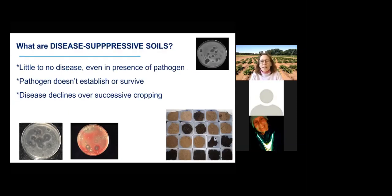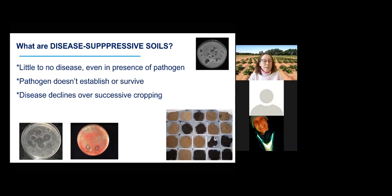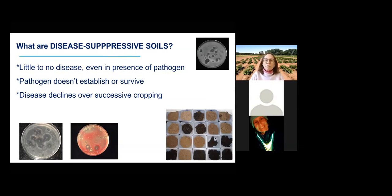What are disease suppressive soils? In a nutshell, a disease suppressive soil is a soil in which disease — usually one, maybe a couple of diseases — has disappeared. There are soils with little to no disease on a susceptible crop, even when the pathogen is present. There are soils in which introduction of a pathogen fails — pathogens don't establish or survive. Many suppressive soils have occurred after long-term successive cropping, in particular long-term monoculture. Many of you in the Pacific Northwest might be aware of take-all suppressive soils, which are a function of long-term wheat monocropping.